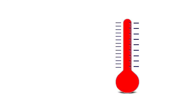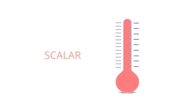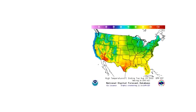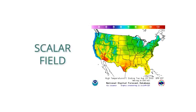Temperature is a scalar. If we display temperature on a weather map, where the value of the temperature is different at each point in space, this is a scalar field.